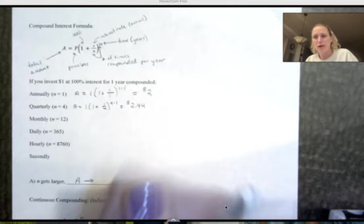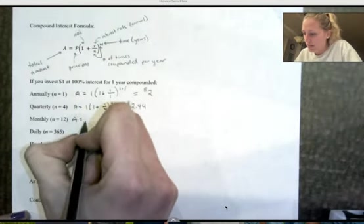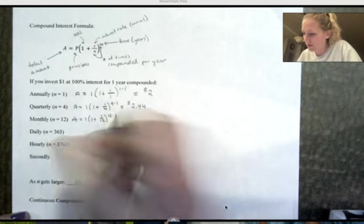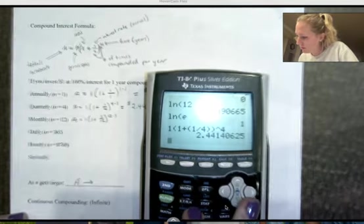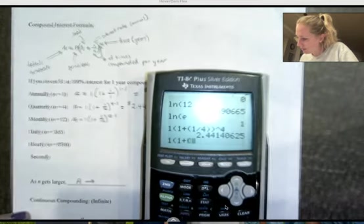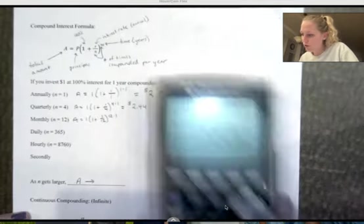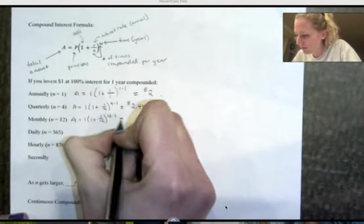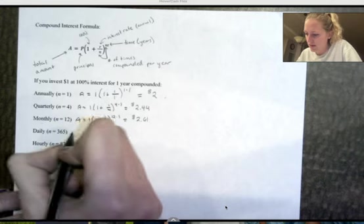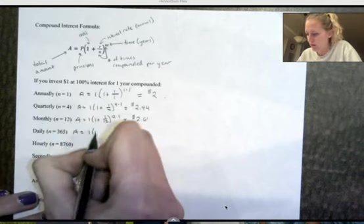I would think that the more it's compounded, it's just going to explode. So let's see what happens. Now n is 12, so everything's the same except n is 12. We got 1 plus 1 over 12 raised to the 12th, $2.61. So again, I increased n and my amount is going up, maybe not quite as much as you think it might be. Let's see what happens when I compound daily.